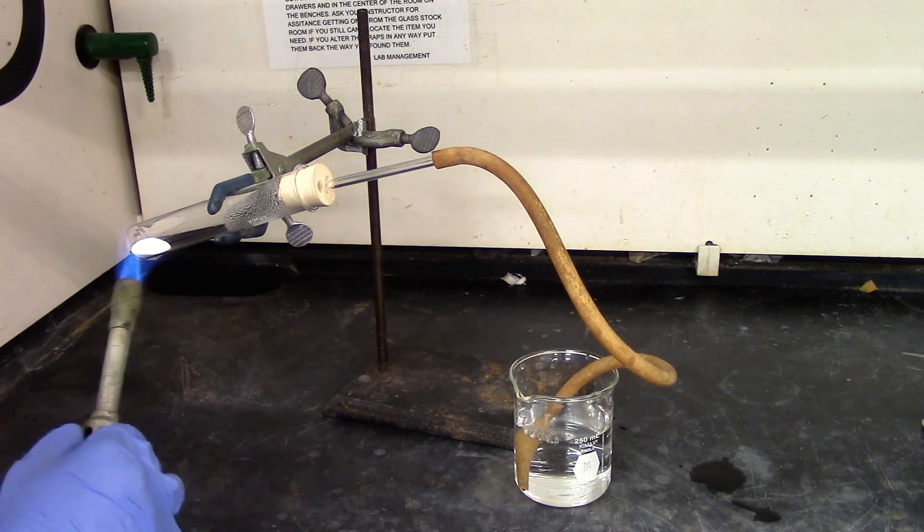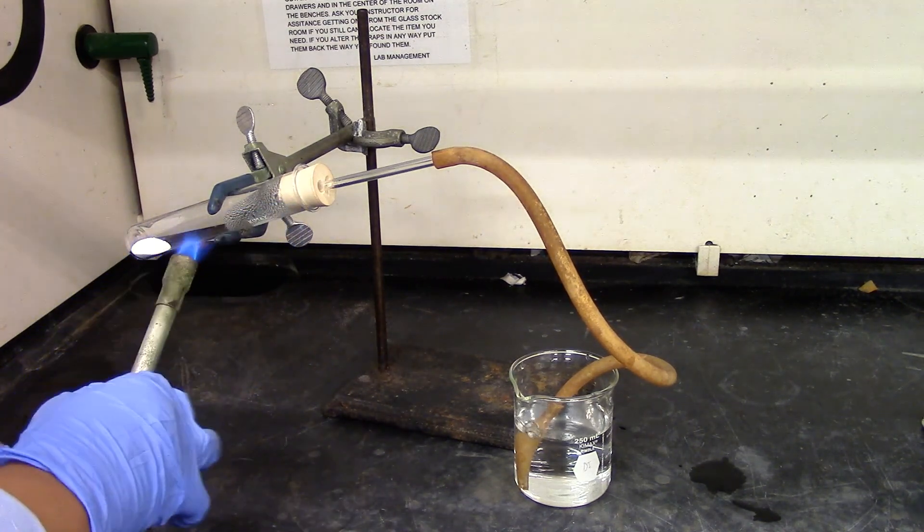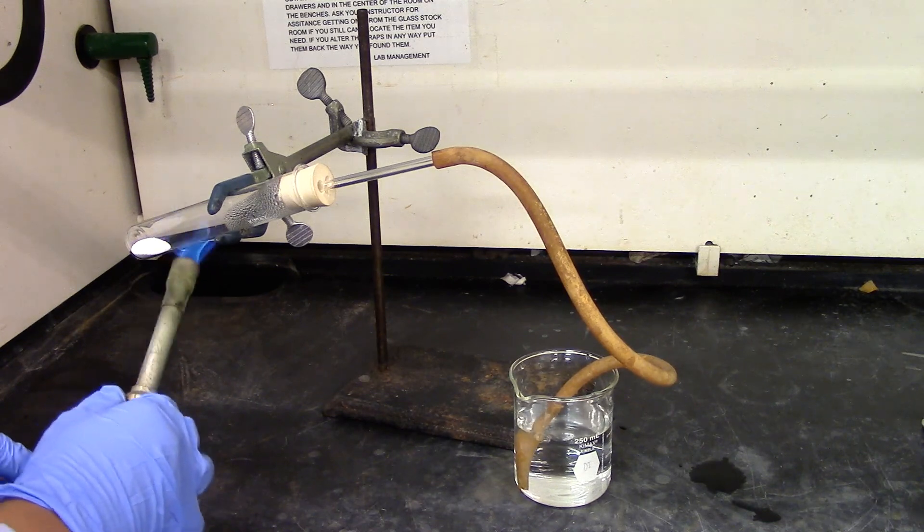We're heating back and forth for even heating. And if you see a drop of moisture coming down, you have to quickly heat the test tube above the solid.